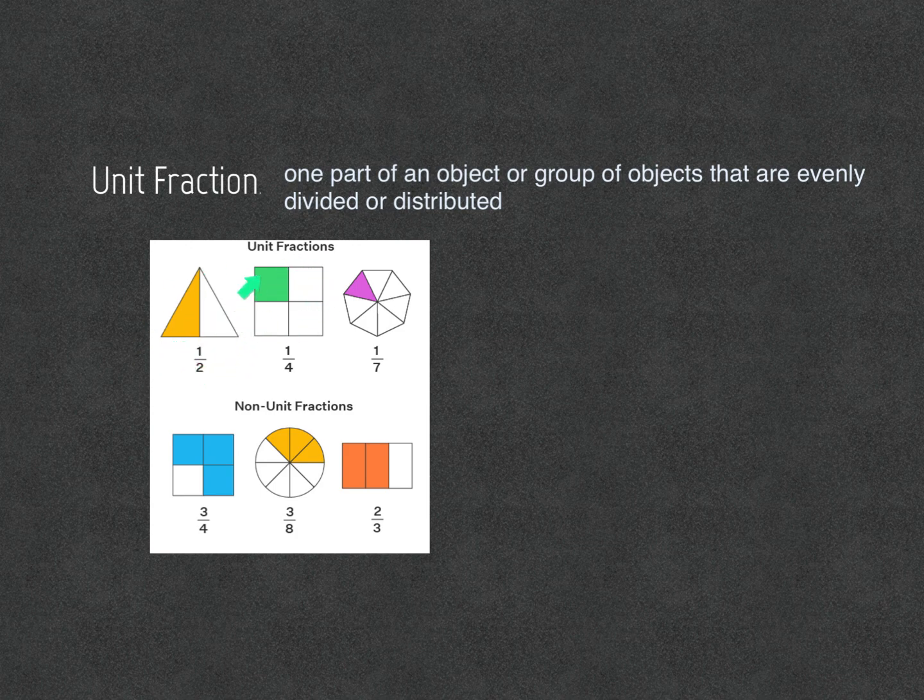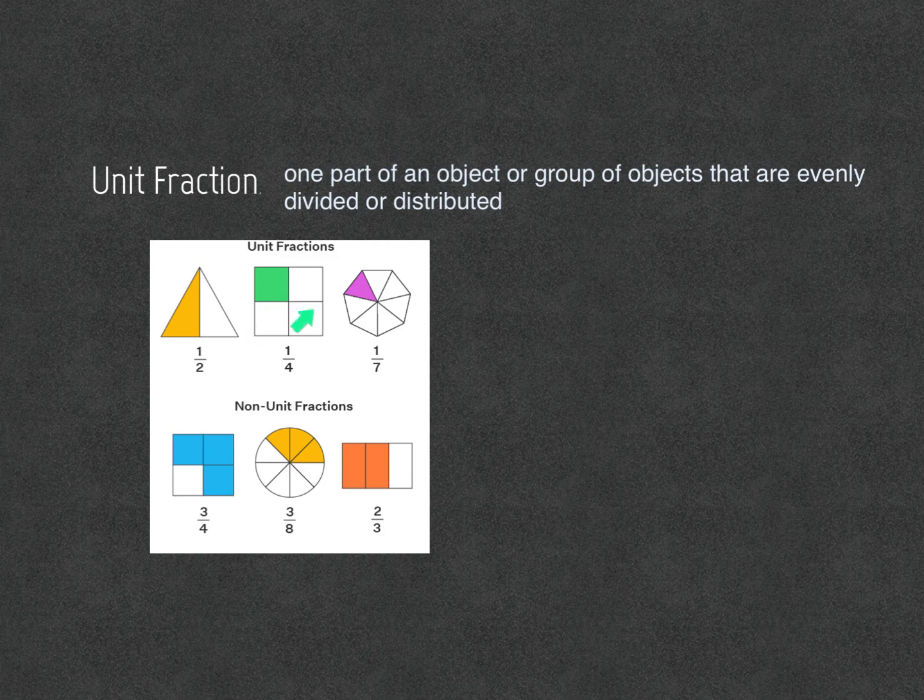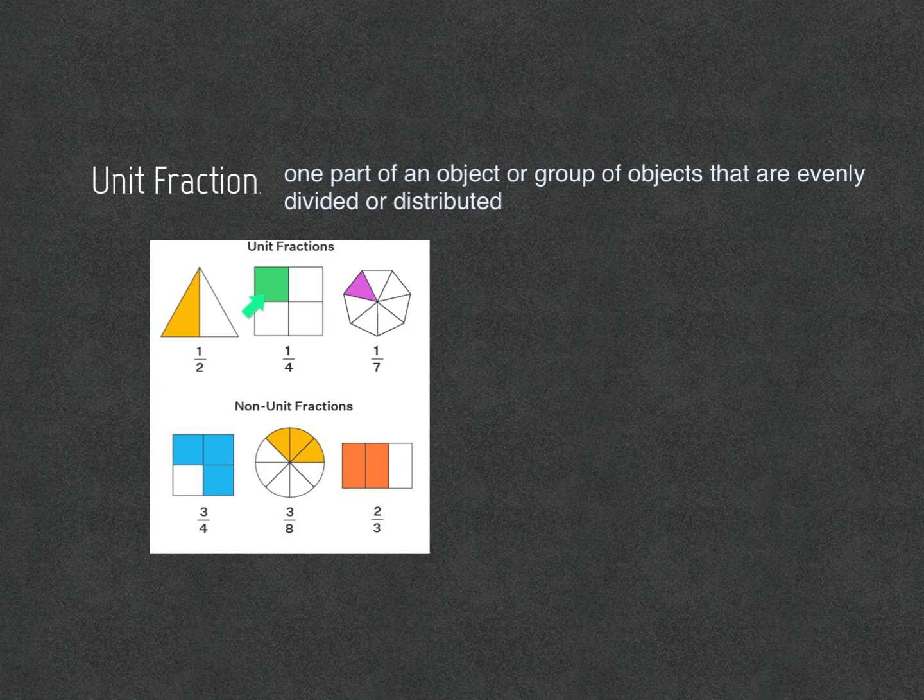For this square, one square is shaded in out of one, two, three, four squares. So, one out of four.